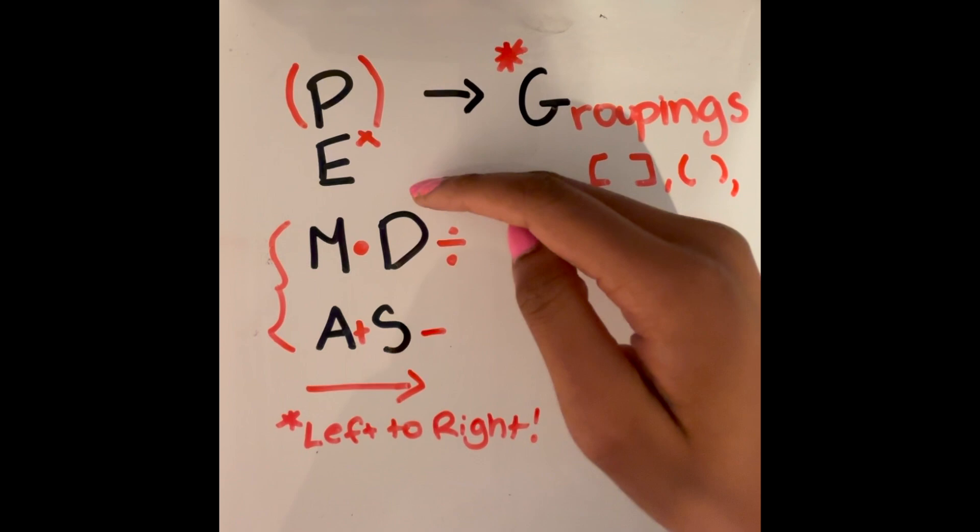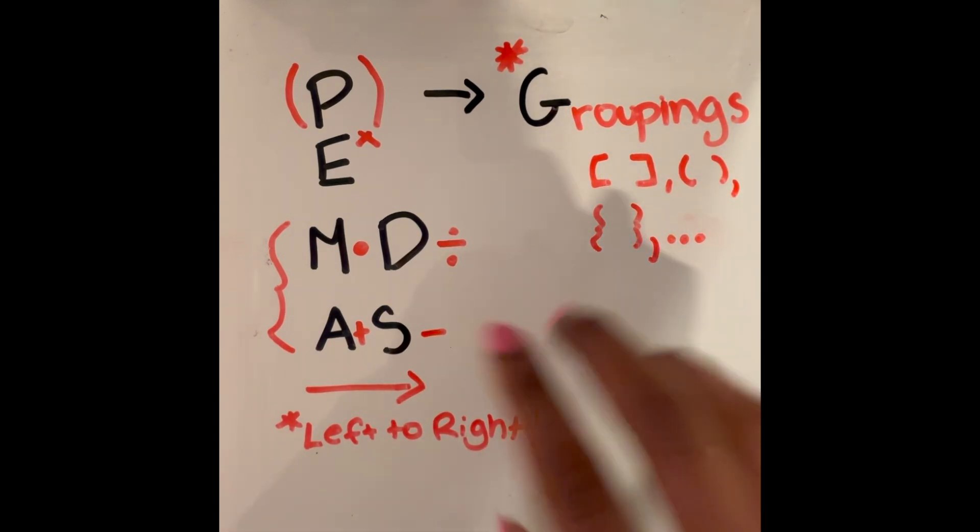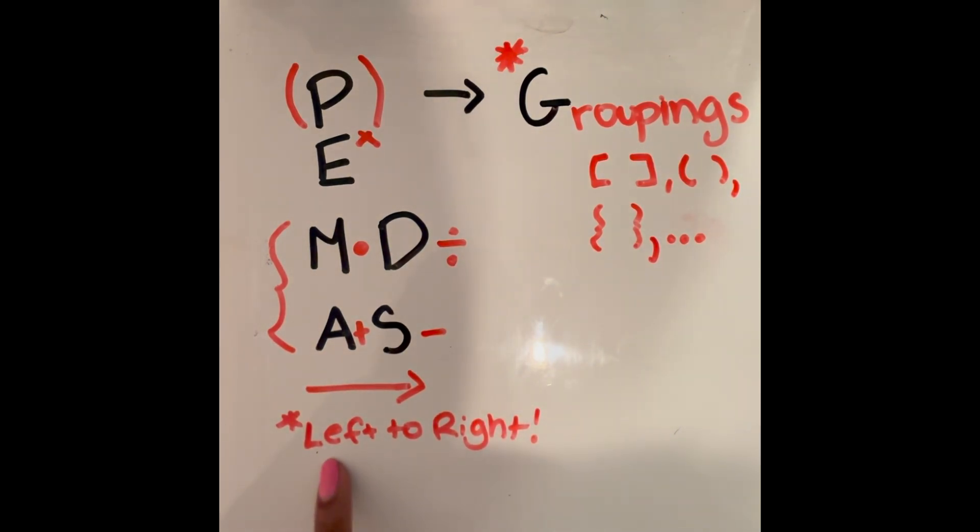When it comes to these last four steps, we're going left to right. So in any sort of mathematical expression or equation that we are trying to simplify or solve, if the division operation happens to come before the multiplication operation, we would do that first because we are solving from left to right. So please make sure to keep that in mind and remember that.